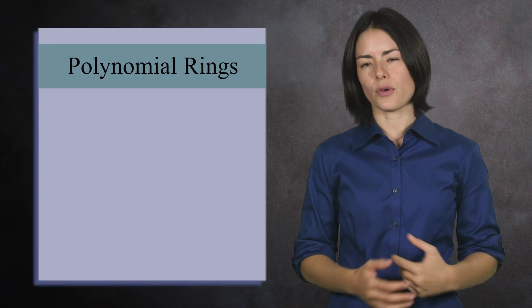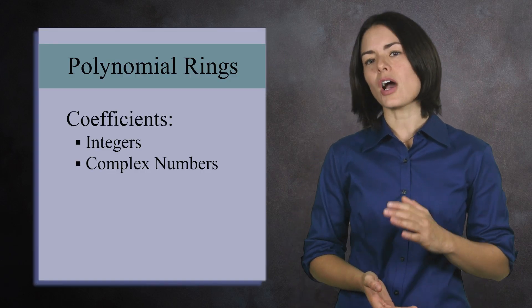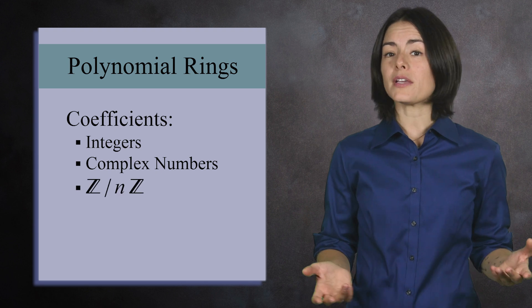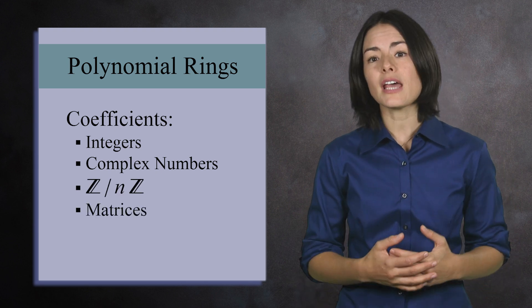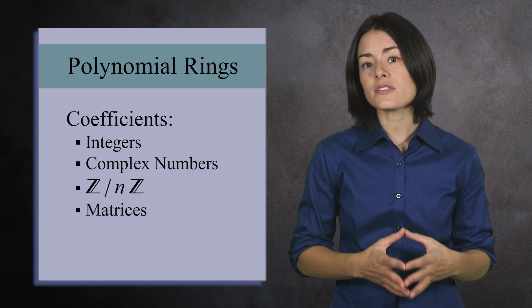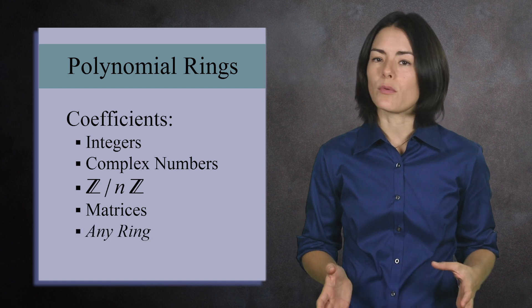In this last example, we looked at polynomials with real number coefficients. But you can use any ring for the coefficients. The integers, the complex numbers, or how about the integers mod n? You can even have polynomials where the coefficients are matrices. Any ring will do.